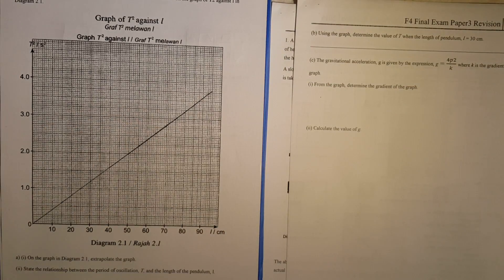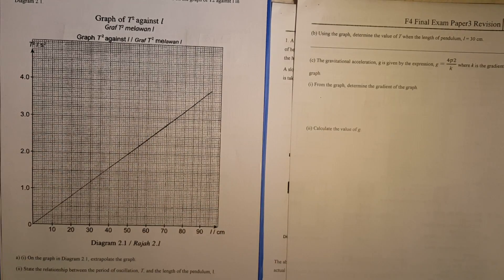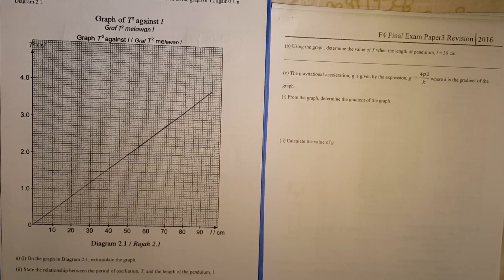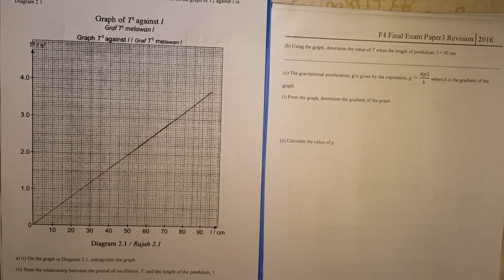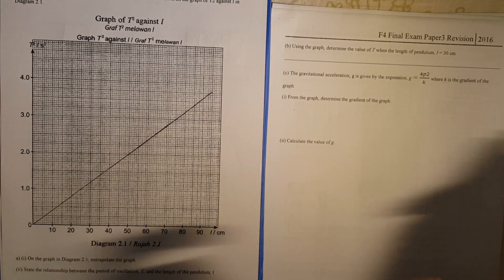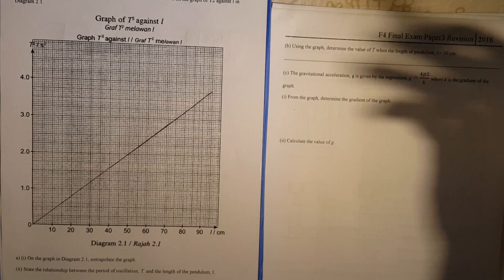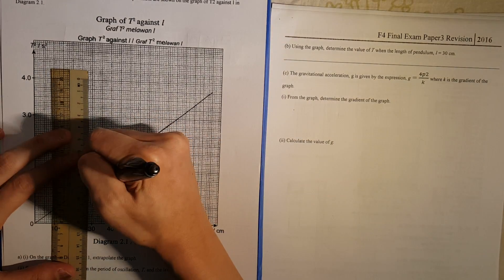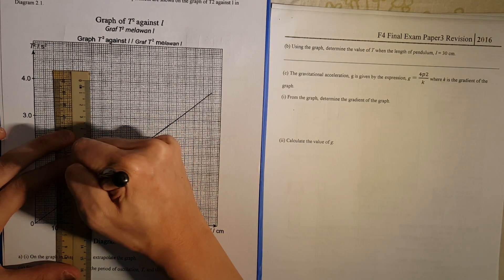What about the relationship? Here, t squared is directly proportional to L. Then you get a question that says: using the graph, determine the value of t when the length of pendulum L is 30 cm. When using the graph, you must show on the graph — this question can go up to two marks. So what you have to do is show 30 cm.